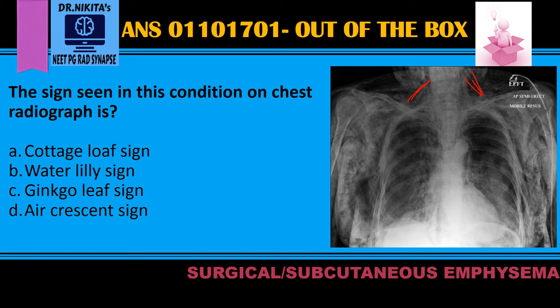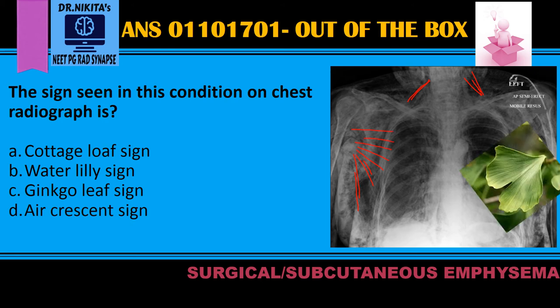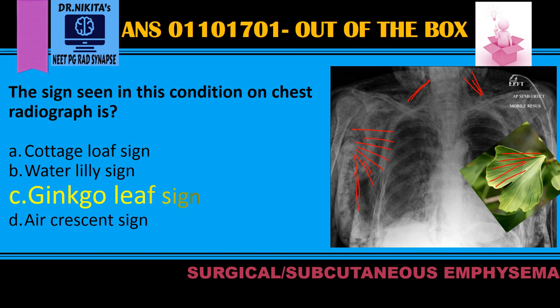To identify the sign, what you see here is the Pectoralis Major Muscle — it also contains this air. Those are the black striations in the Pectoralis Major Muscle, which is similar to this Ginkgo leaf. The Pectoralis Major Muscle with these striations, the black lines resembling air — that is the Ginkgo leaf sign seen in surgical or subcutaneous emphysema.